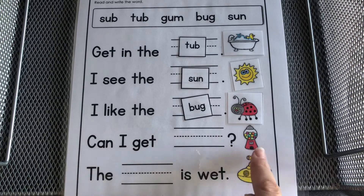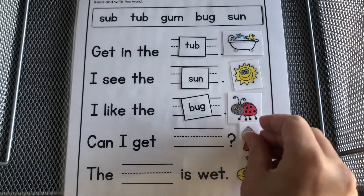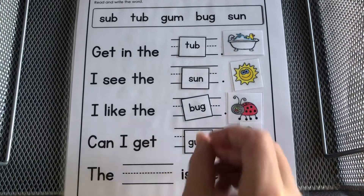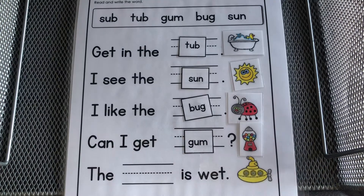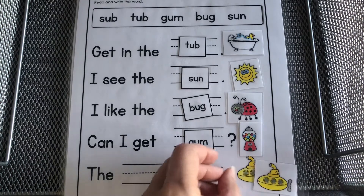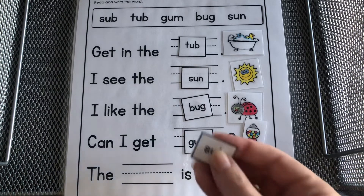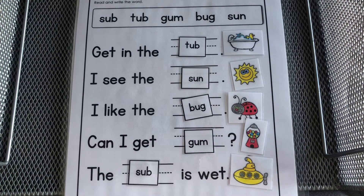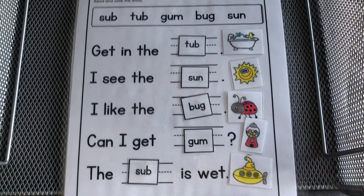Can I get — what's that? Can I get gum? The something is wet. The sub is wet. Good.